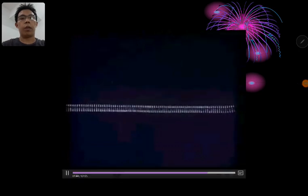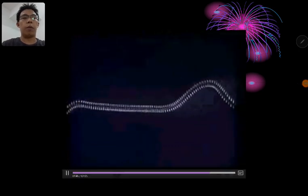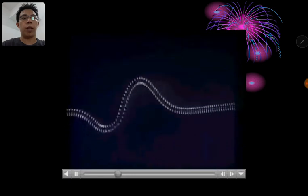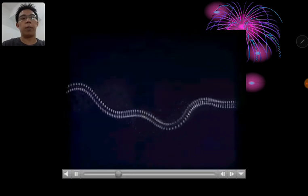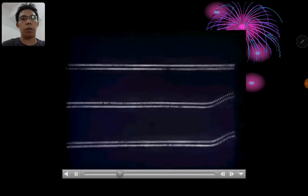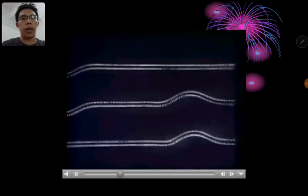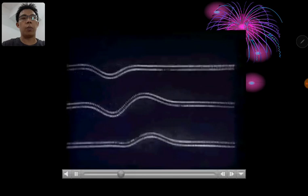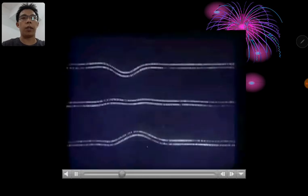What if now we have the two pulses coming from two sides, but now there are one peak and one trough. Just now it's two peaks. Now it's one peak and one trough. As you can see here, these two pulses, they actually cancel off each other.